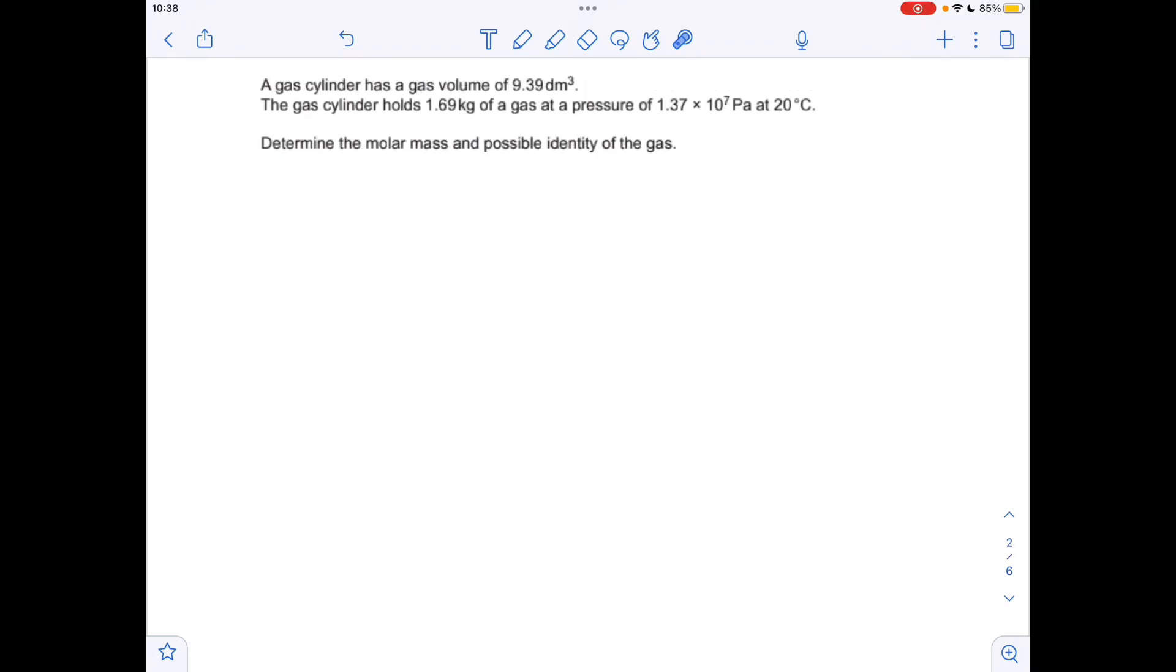Which gives an answer of 7.224 times 10 to the 22. Moving on to the next question, so obviously to work out the identity of the gas we need to know its Mr, and to get the Mr we need to know the moles. So we need to rearrange the ideal gas equation for moles, so that's pV over RT.